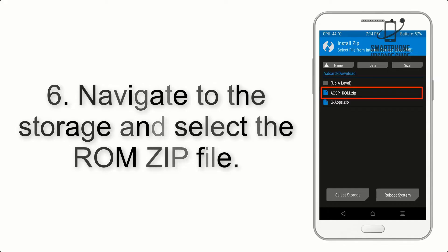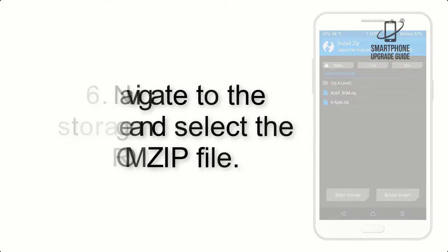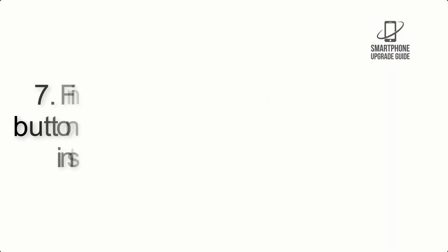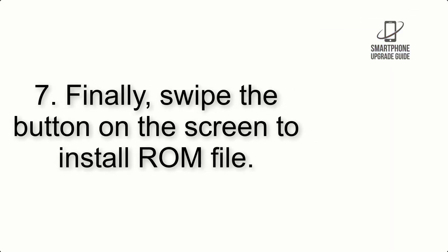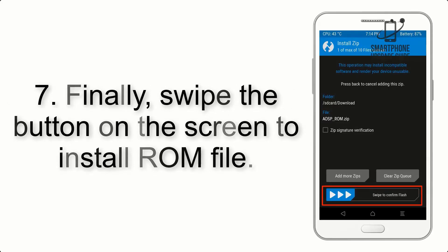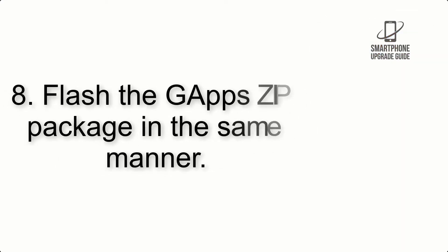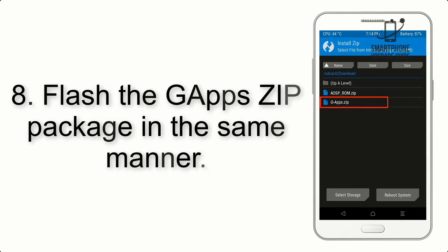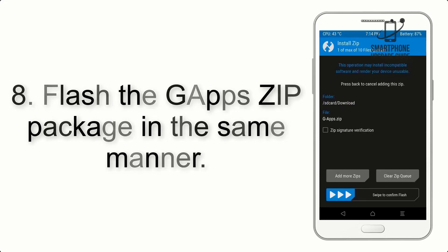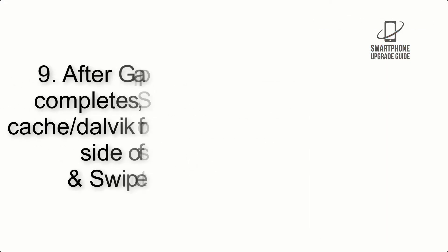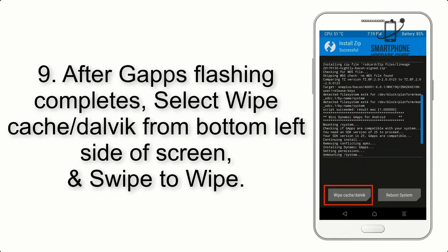Step 5: Go back to the recovery main screen and tap on the Install button. Step 6: Navigate to the storage and select the ROM zip file. Step 7: Finally, swipe the button on the screen to install the ROM file.